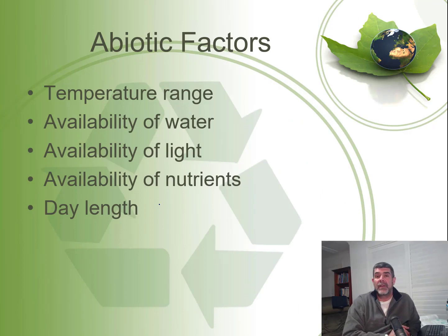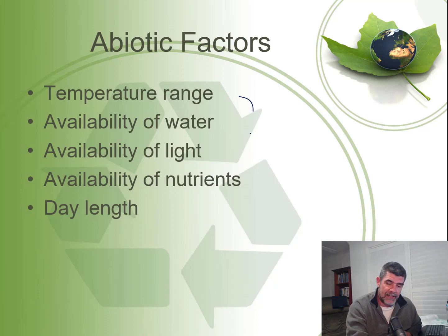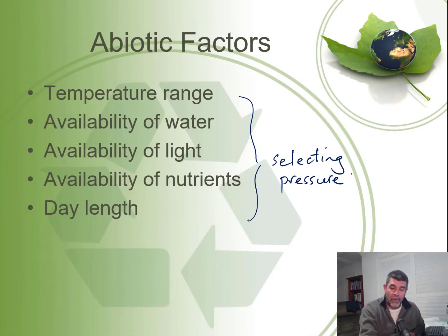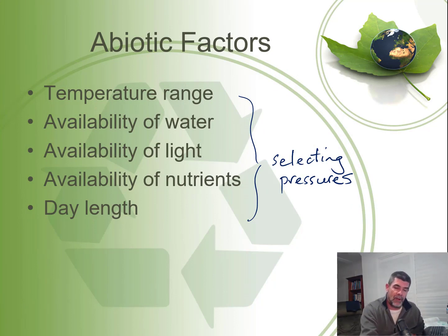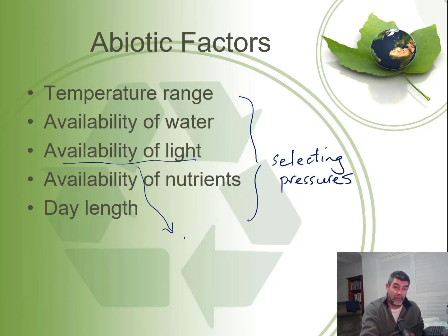When we look at abiotic factors, these are all the sorts of factors that can act as selecting pressures, shifting populations and favouring some individuals over others. For example, the availability of light is critically important — not just for hunters, but most obviously for plants because of the process of photosynthesis.